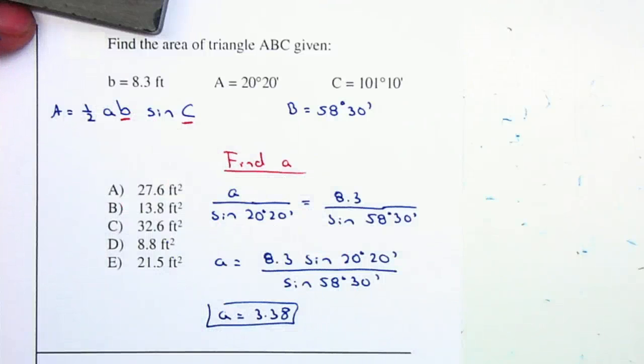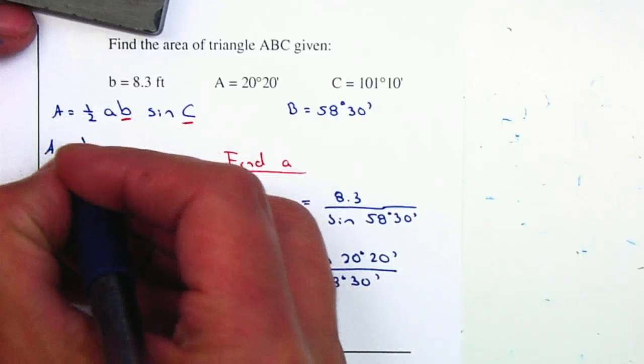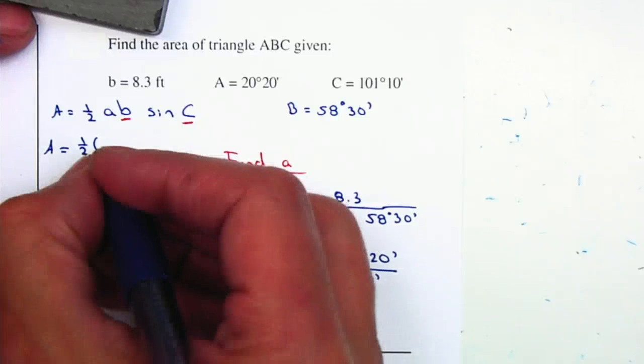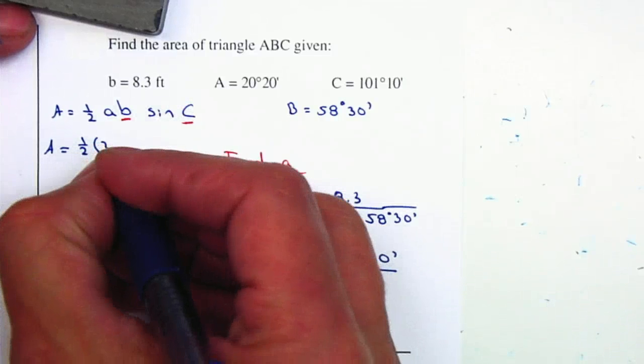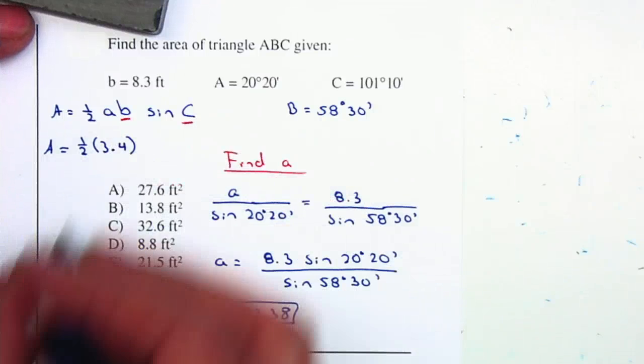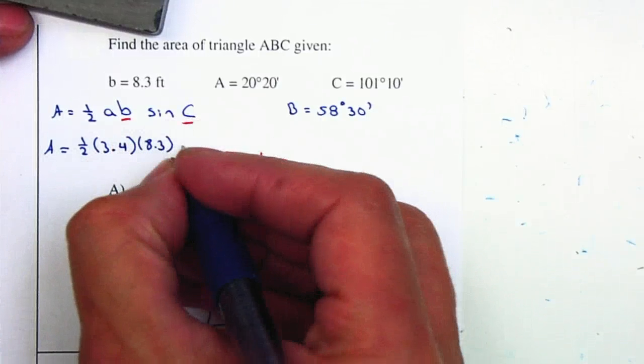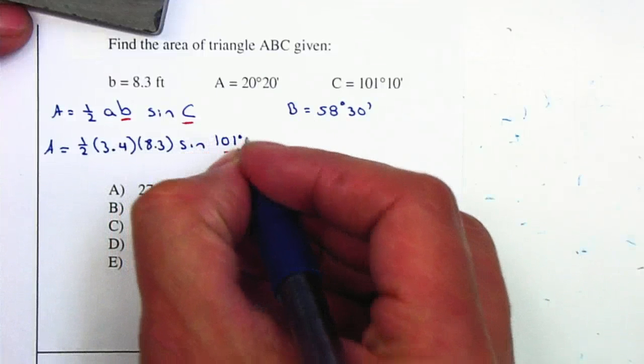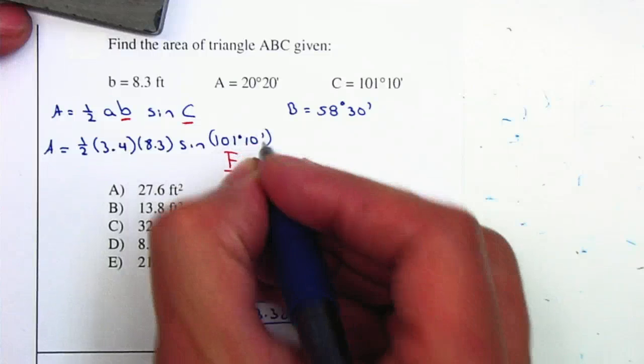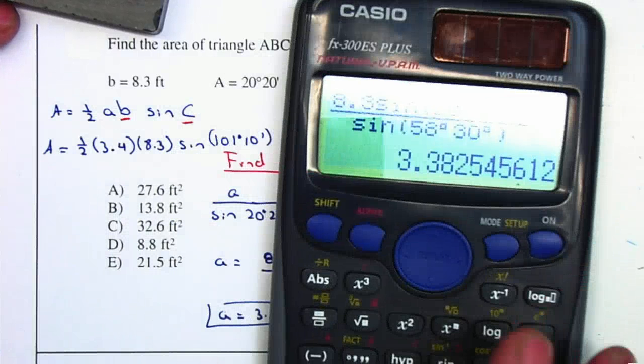Now I can use my formula. Area equals one half A, which is what we found—I'm just using 3.4, which should be fine—times B, which is 8.3, times sine of C, so sine of 101 degrees 10 minutes.